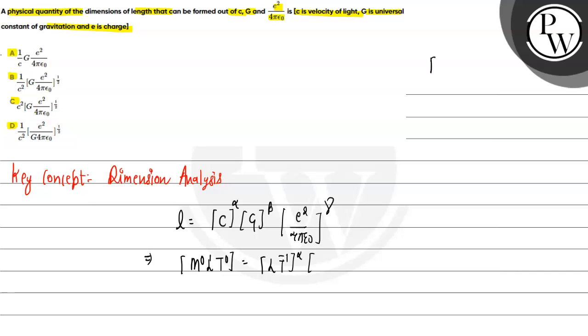G is the universal gravitational constant. The dimension of G: force is mass into acceleration MLT⁻², R is distance L. So from F = GMm/R², we get G dimensions as M⁻¹L³T⁻².